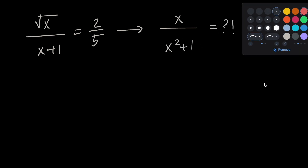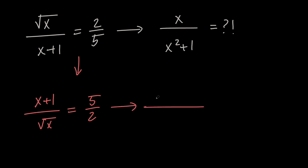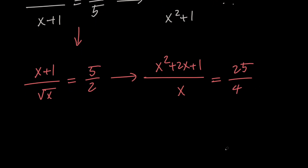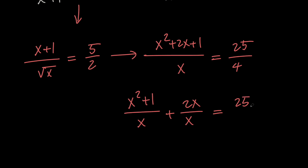To do that, let's go ahead and flip both sides of the given equation. So we're going to have x plus 1 over root x equals 5 halves, and then let's go ahead and square both sides to get x squared plus 2x plus 1 over x equals 25 over 4. Next let's break the fraction on the left hand side into two fractions: x squared plus 1 over x plus 2x over x. Notice that 2x over x is 2.